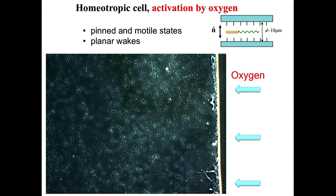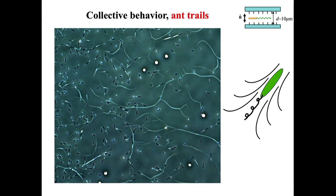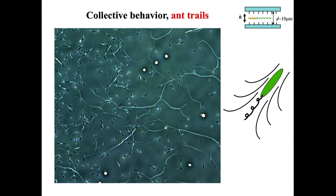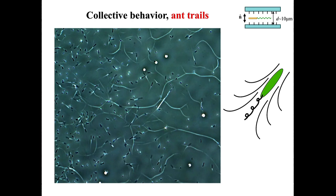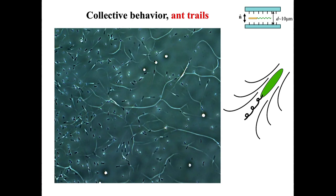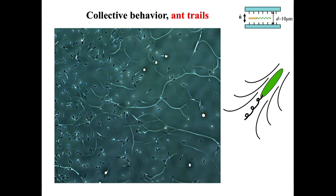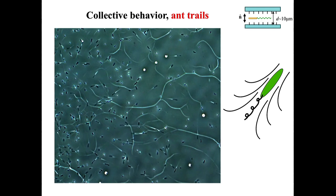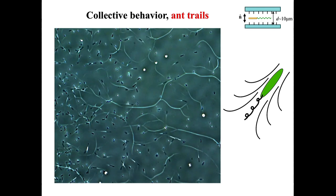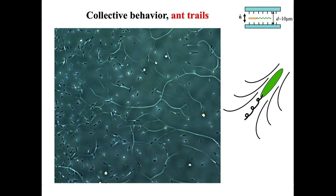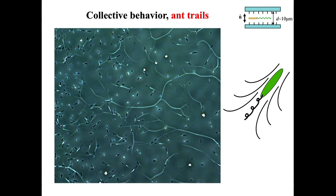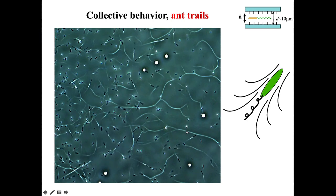What you can also notice is that each bacteria will create a white trace. And this trace is a disturbance of initially vertically oriented director field. So swimming bacteria creates such configuration like funnel configuration and attracts other bacteria to the trace.